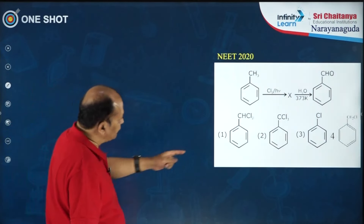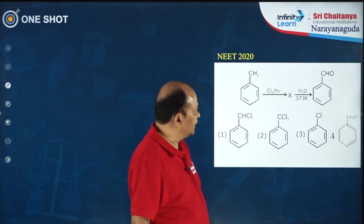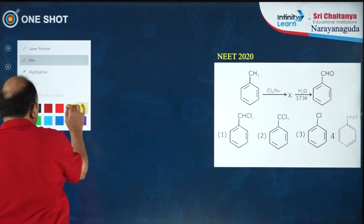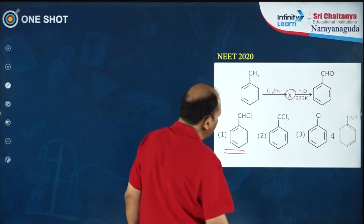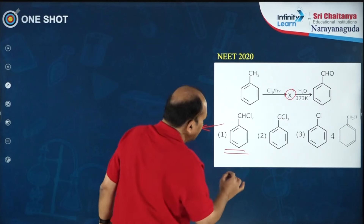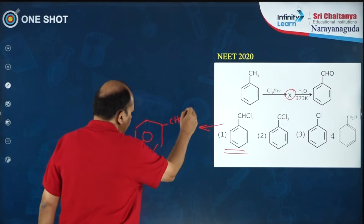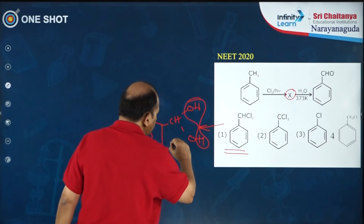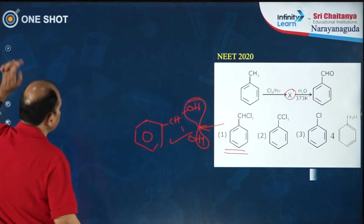An interesting question: toluene undergoes chlorination under free radical conditions followed by hydrolysis to give benzaldehyde. There is an intermediate compound. The intermediate is benzal chloride (C6H5CHCl2); when treated with water you get C6H5–CH(OH)2, and water is eliminated from this to give benzaldehyde. So the answer is the first option.